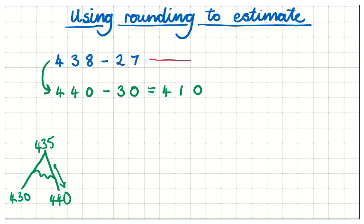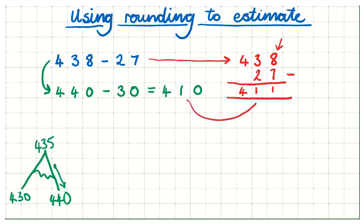So, let's see if we are correct. I'm now going to do this vertically. 438 take away 27. So, I'll do my ones first. 8 take away 7, leaves me 1. 3 take away 2, leaves me 1. And 4 hundreds, take away no hundreds. So, the actual answer is 411, which is very similar to our estimate of 410.